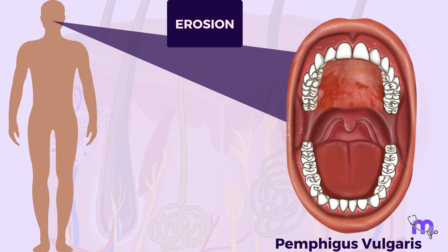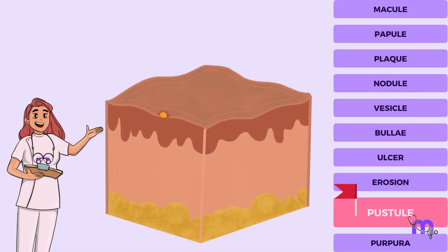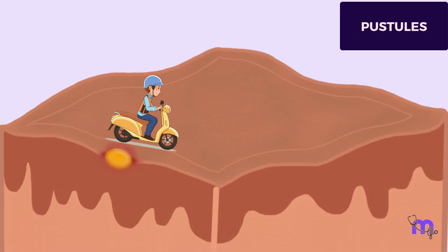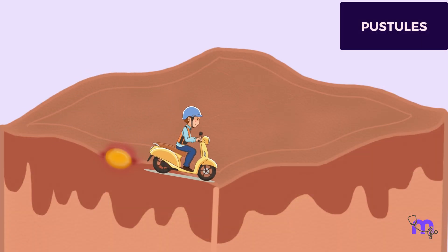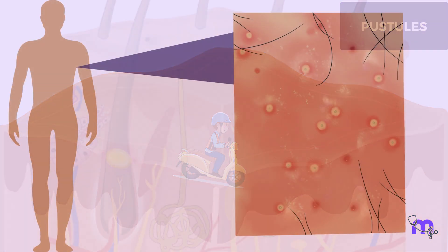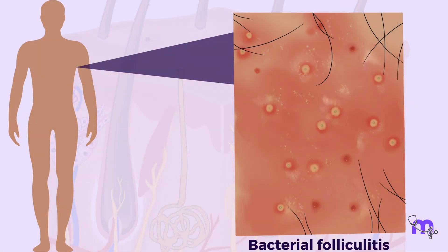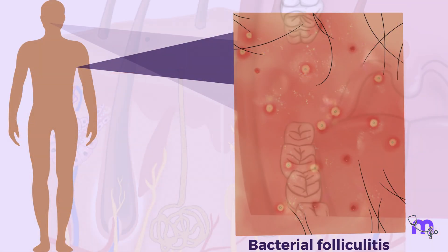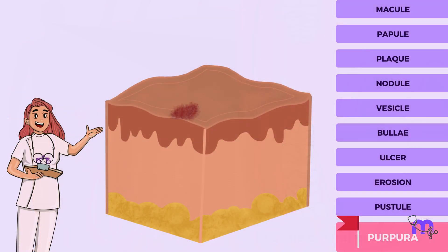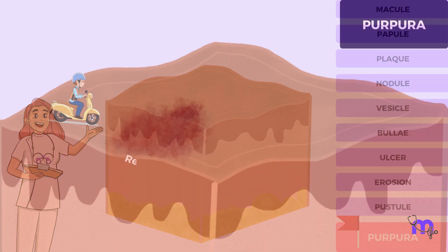Moving on to pustules — these are pus-filled blisters that appear on the skin or oral mucosa. The pus inside the pustule gives it a yellow color. Bacterial folliculitis is a skin condition that causes pustules to develop. Oral pustulosis is a condition that forms pustules in the oral mucosa.